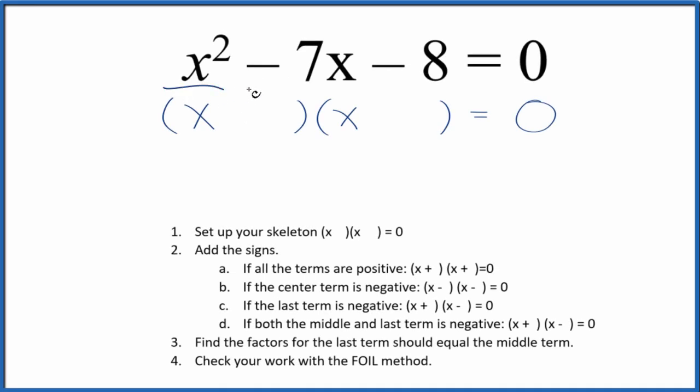Let's factor the equation x squared minus 7x minus 8. We'll use these guidelines to help us. First off, we want a skeleton equation. This is our skeleton equation. Because once we have that, we can add the signs to the skeleton.